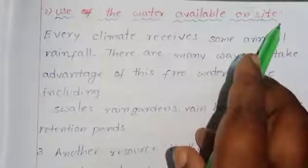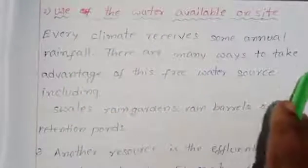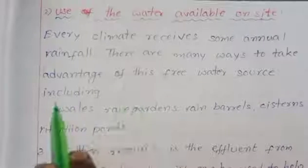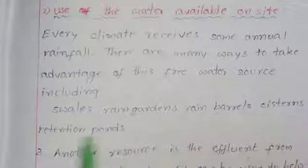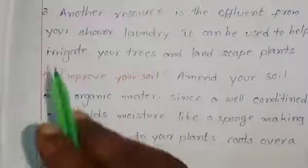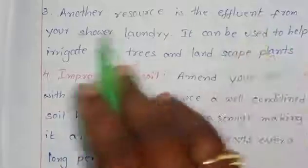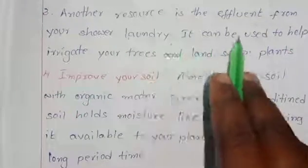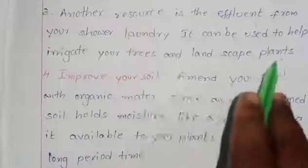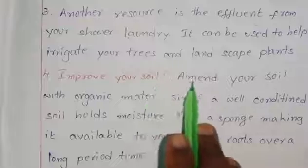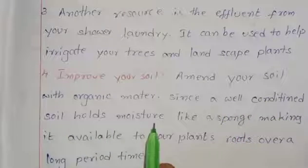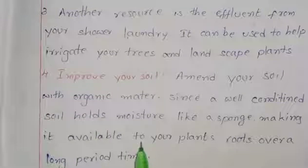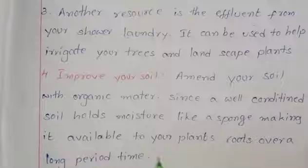Use the water available on site. Every climate receives some annual rainfall. There are many ways to take advantage of free water sources, including swales, rain gardens, rain barrels, cisterns, and retention ponds. Another resource is the effluent from your household laundry, which can be used to help irrigate trees and landscape plants. Improve your soil by amending it with organic matter, since well-conditioned soil holds moisture like a sponge, making it available to plant roots over a long period of time.